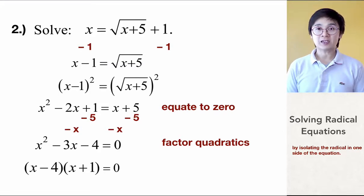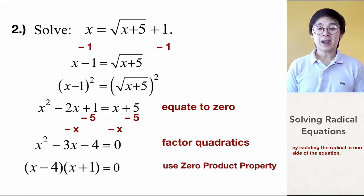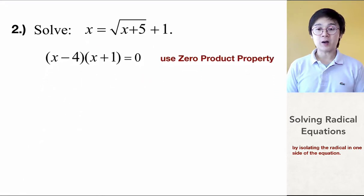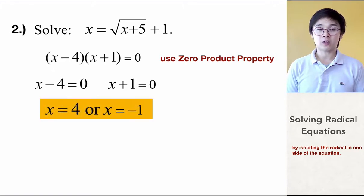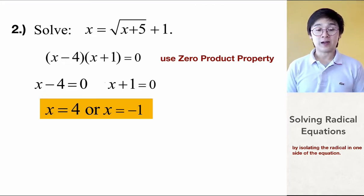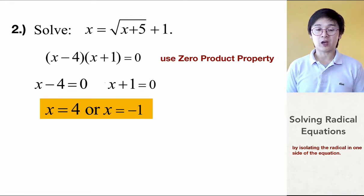Now that we're able to factor it out, we're going to use the zero product property to solve for the value of x. By using the zero product property, we will end up with x minus 4 is equal to 0 and x plus 1 is equal to 0. And by solving for our two sets of equations, we'll have the solutions for our radical equations, which are x equal to 4 and x equal to negative 1.